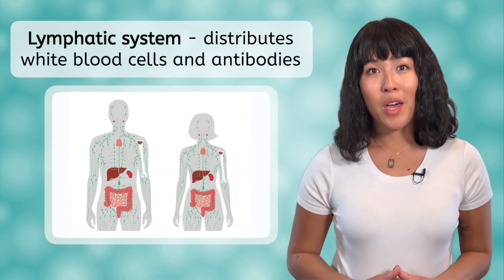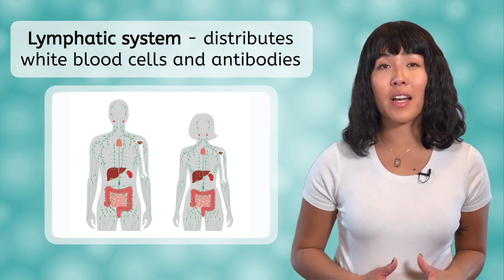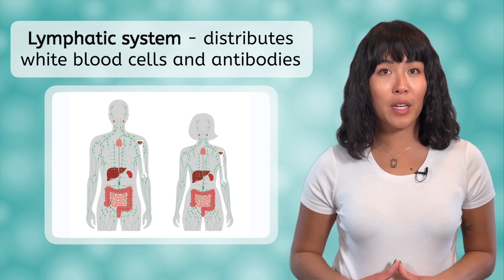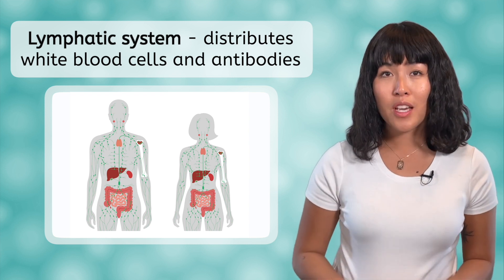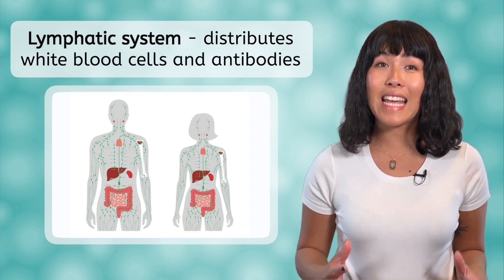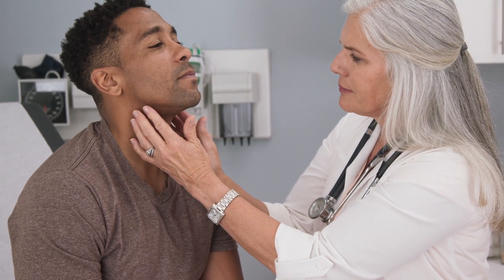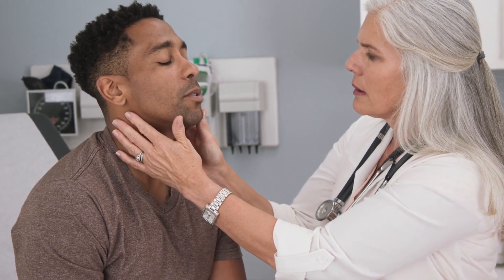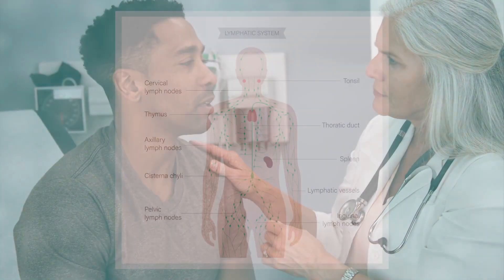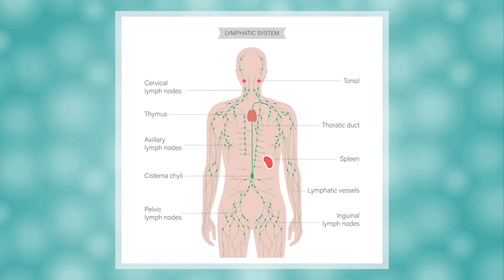Much of the immune system's work is carried out by the lymphatic system, which helps distribute white blood cells and antibodies throughout the body. Lymph fluid transports pathogens to the lymph nodes, where T-cells and B-cells can target and kill them. Have you ever noticed swelling just above your neck or in your armpits when you are sick? These are common sites of lymph nodes, and swelling here indicates that your body is busy fighting off an infection. In addition to lymph nodes, the spleen, thymus, and tonsils are all organs of the lymphatic system that play important roles in the immune response.